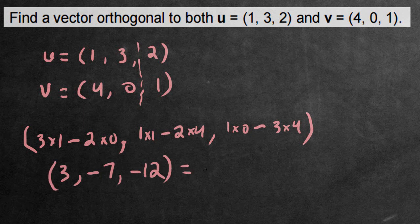And this here would be our orthogonal vector. This vector would be 90 degrees to these two other vectors, the vector u and the vector v.